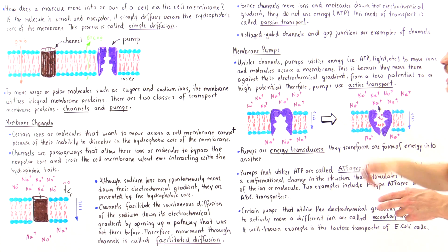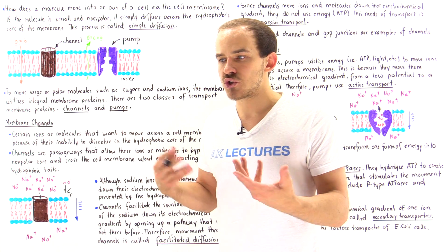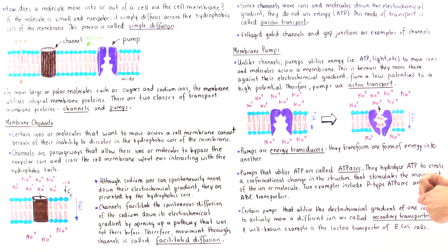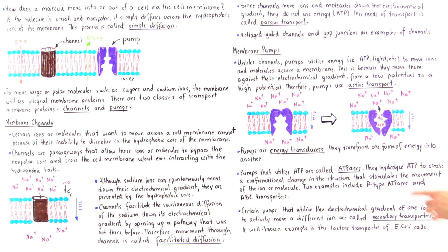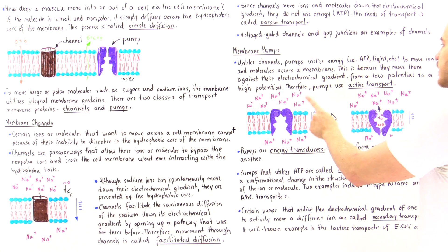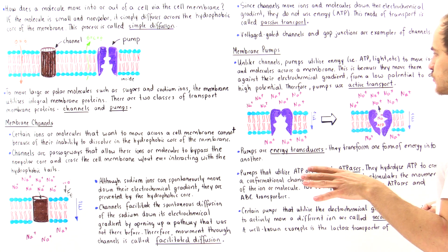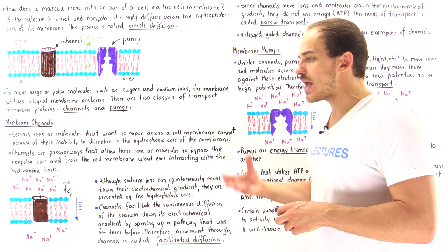In the same way, membrane pumps utilize energy to move ions and molecules against their electrochemical gradient from a low to a high potential. Because they use energy, we call them active transporters, and this mode of transport is known as active transport. Unlike channels, pumps utilize energy — which can be the energy stored in the chemical bonds of ATP molecules, or in some cases, light energy absorbed by the pump.